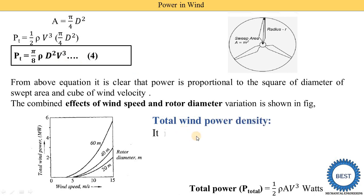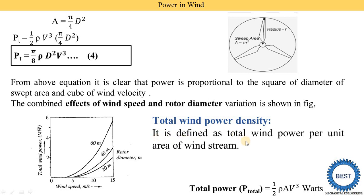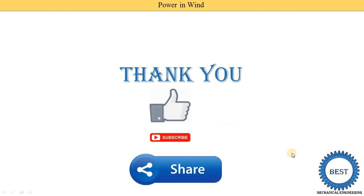We now learn about total wind power density, defined as total wind power per unit area of wind stream. Dividing the total power equation by area A cancels out A, giving: Wind power density = P/A = ½ρV³. Thank you for watching this video. If you learned something, please like the video, subscribe to my channel, and share with your friends.